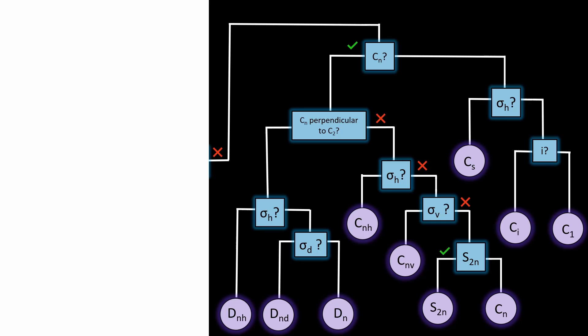If it has an improper rotation axis, it would be S2N, for example staggered ethane. But if it has none of the above, it's simply Cn, for example cyclopropane.